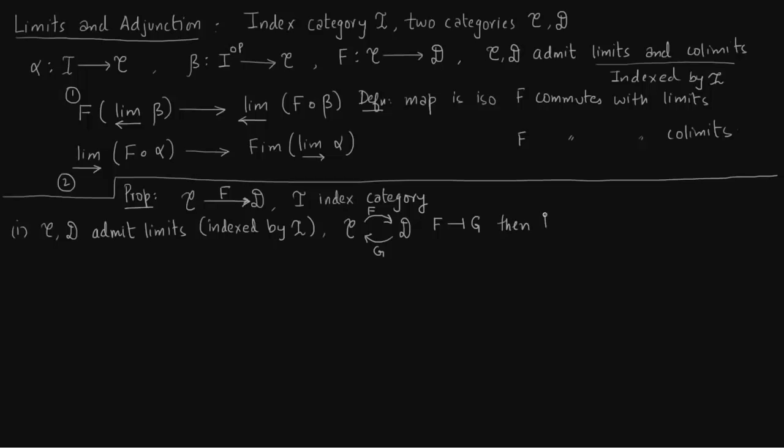Then F commutes with projective limits, or F commutes with limits, in the sense of the definition given above. So it commutes with limits indexed by I if the map is ISO.